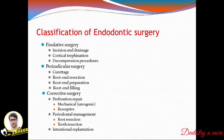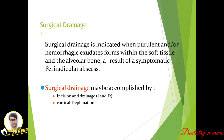The classification of endodontic surgery includes: facility surgery such as incision and drainage, trefination, and decompression; peri-radicular surgery such as curettage, root-end resection, and root-end filling; and corrective surgery such as perforation repair, periodontal management, and intentional replantation. Surgical drainage is indicated when a purulent or hemorrhagic exudate forms within the soft tissue and alveolar bone as a result of an acute peri-radicular abscess.